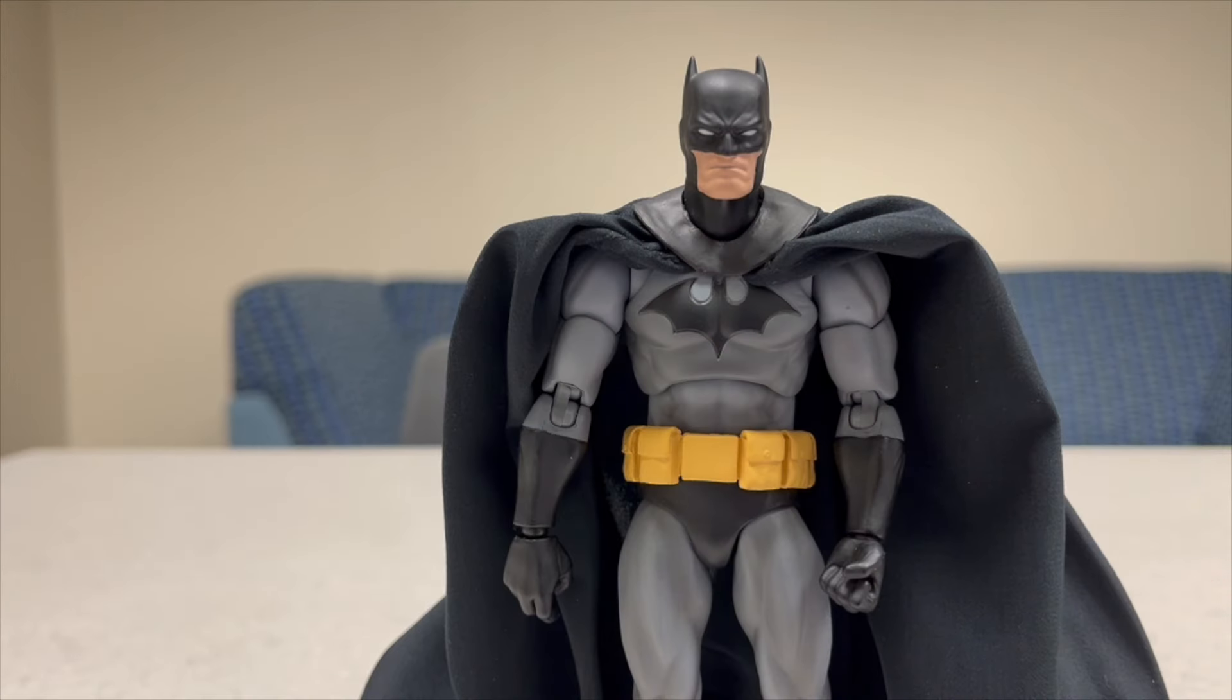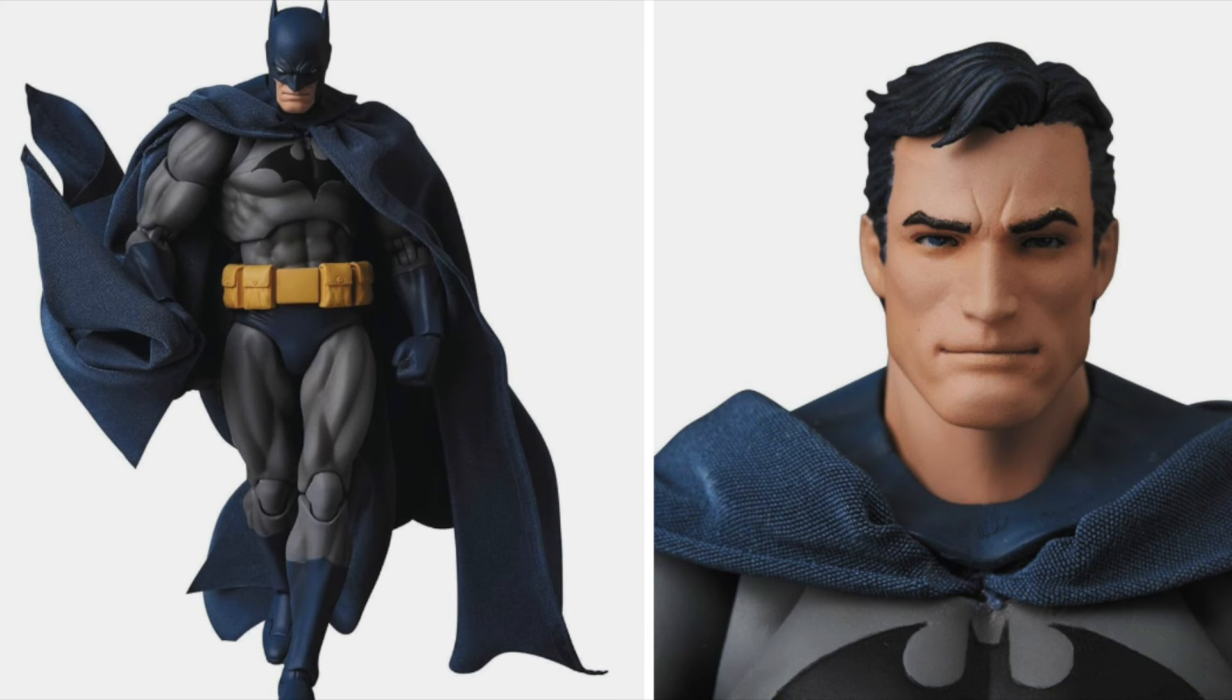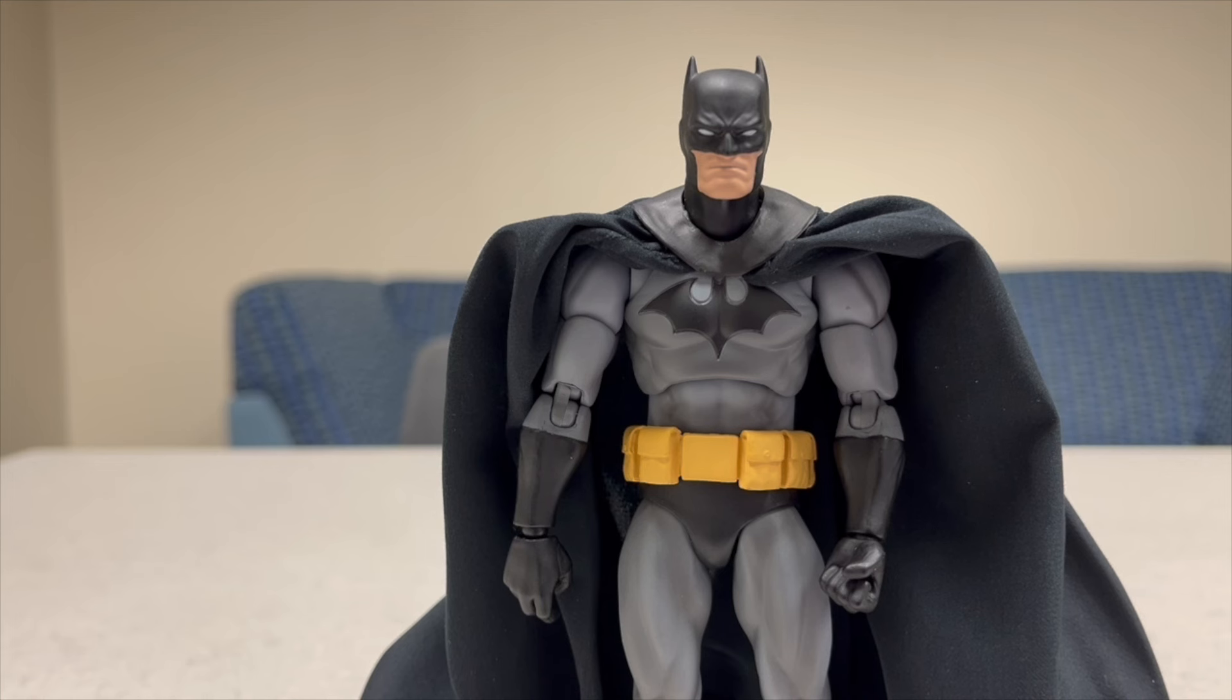Some information before we proceed with this guy, there are two main Batman Hush Mafex figures: one that's based on the blue and gray version and one that's based on the black and gray version. This is obviously the latter. The only difference besides the obvious appearance is the inclusion of two different accessories. The blue and gray version comes with an unmasked Bruce Wayne head and the black and gray version comes with its own unique stand for Batman.